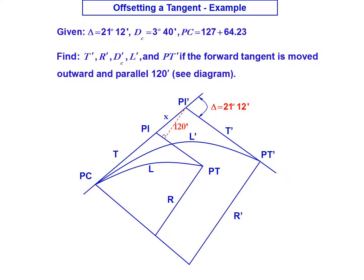We're going to look at an example for offsetting a tangent for a horizontal curve. We're given a curve with a deflection angle of 21 degrees 12 minutes. It's a 3 degree 40 minute curve, and the PC is located at station 127 plus 64.23.